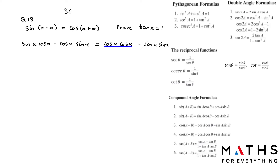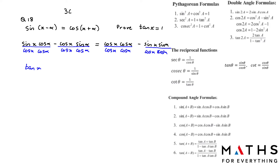Whatever you have here, divide each term by cos x cos alpha — each term — because we want to turn to tan x. We want sine on the top and cos on the bottom. The sine x and cos x will turn into tan x; cos alpha and cos alpha will get cancelled. The cos x and cos x will get cancelled, giving us negative tan alpha.